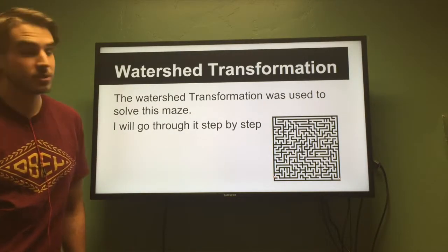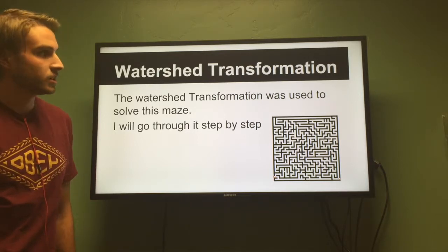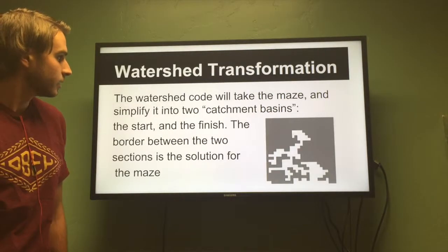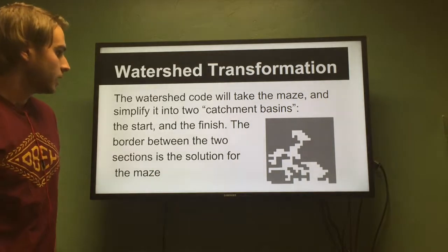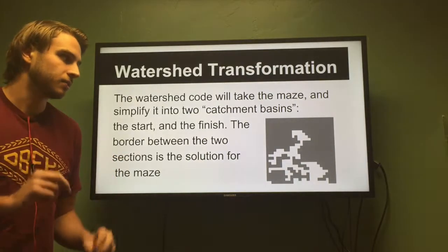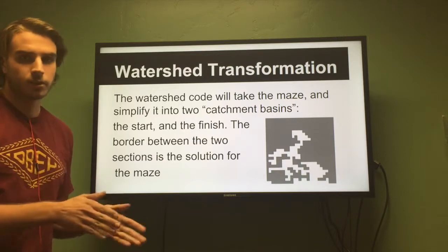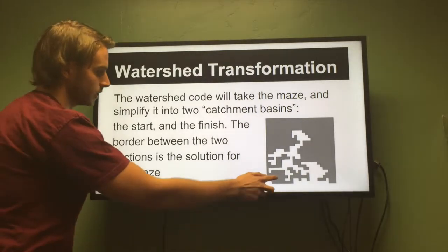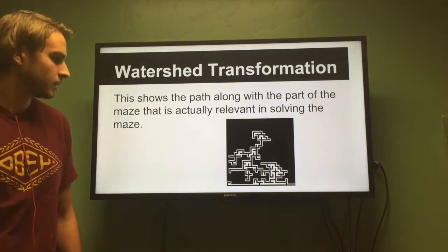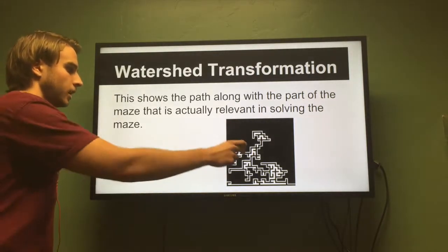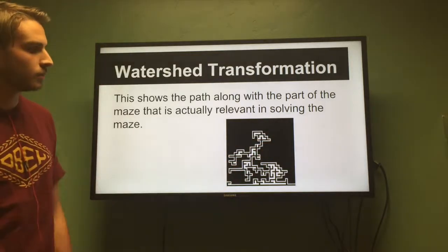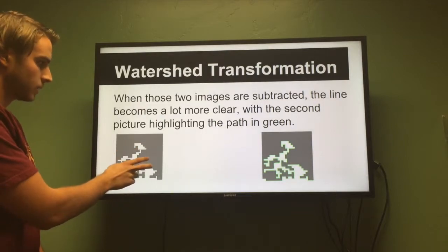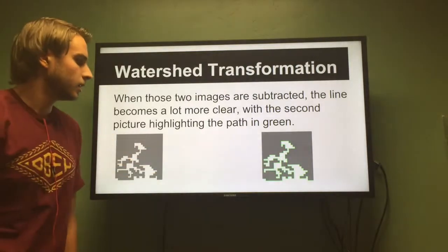My part of the project was using the watershed transformation to solve mazes. The watershed transformation is based on a pre-downloaded code that I manipulated. The first step runs the watershed code on the input image — it takes two catchment basins, since watershed is usually used in reference to water flow through dams. The first catchment basin is where it starts, the second is where it ends. The difference between the two is the grey and white, and the border between them — the black — is the solution. Next I get rid of all parts we don't need, leaving just the maze area of interest. Then I subtract the two images, resulting in a new picture, and to make the path clearer, I make it green.